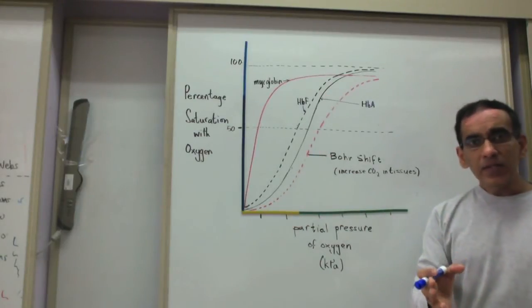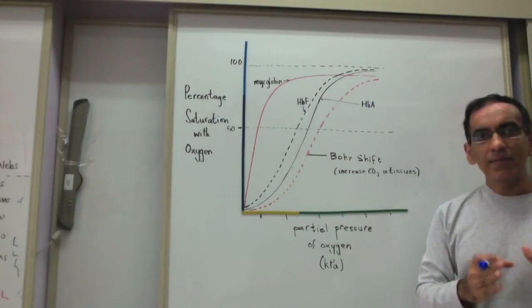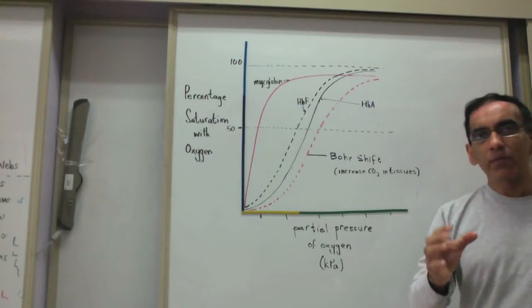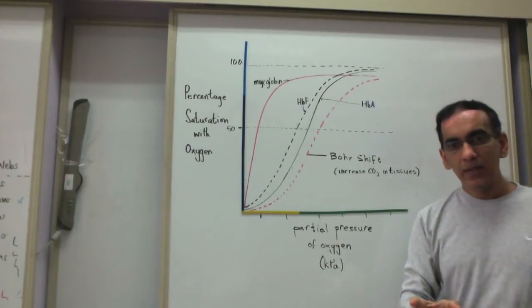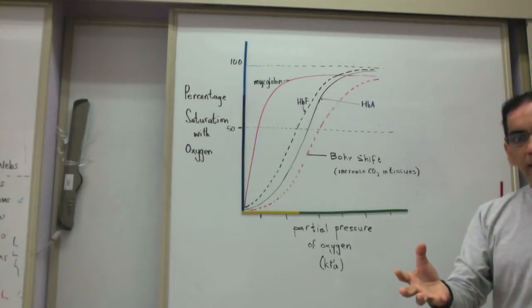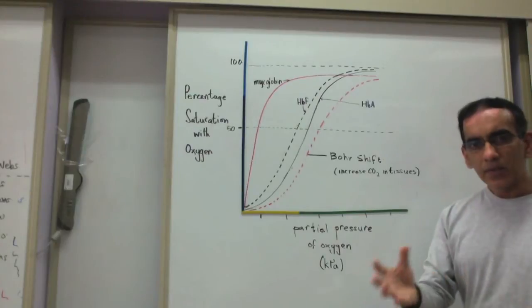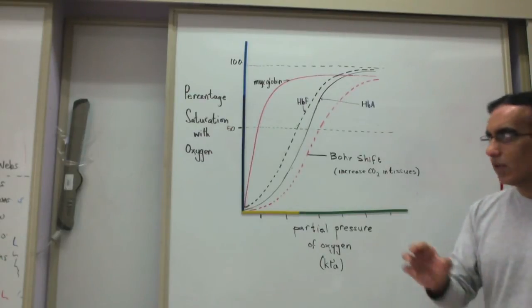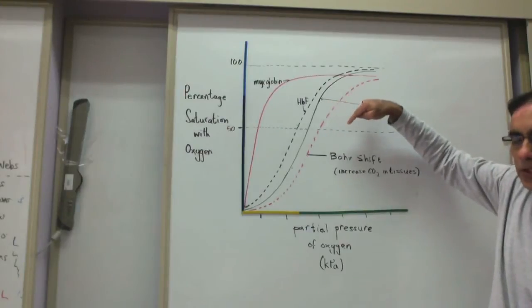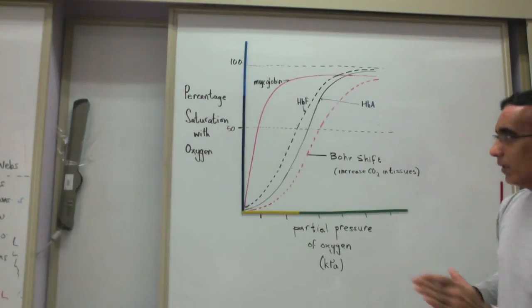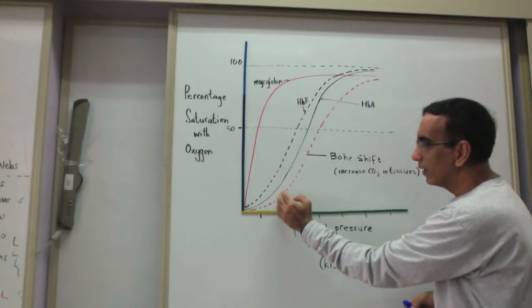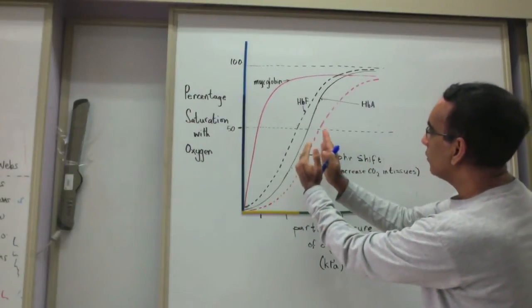In instances of intense muscular activity, body tissues produce greater amounts of carbon dioxide. When this carbon dioxide enters into the blood, it dissolves to form carbonic acid. And this has the effect of lowering the blood pH. When the pH gets lowered, the oxygen dissociation curve of hemoglobin shifts a little bit to the right.